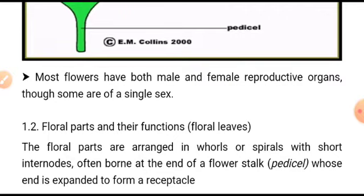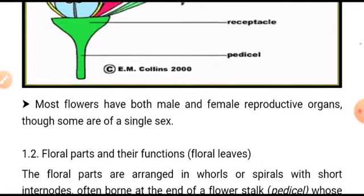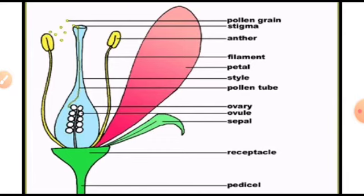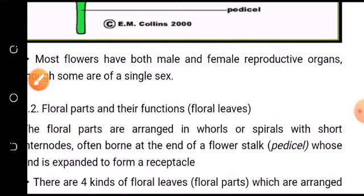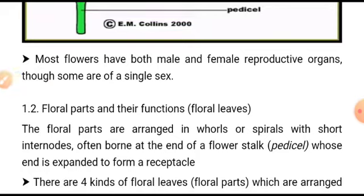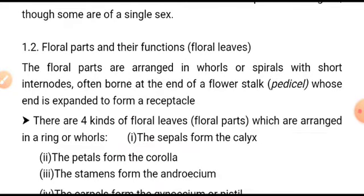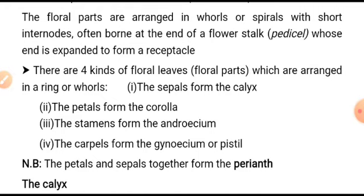Most flowers have both male and female reproductive organs, though some are of a single sex. The floral parts are arranged in whorls or spirals with short internodes, often borne at the end of the floral stalk (pedicel), whose end is expanded to form a receptacle. There are four kinds of floral leaves arranged in a ring or whorl: the sepals (calyx), the petals (corolla), the stamens (androecium), and the carpels (gynoecium or pistil).